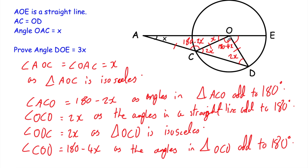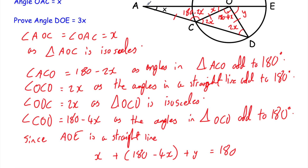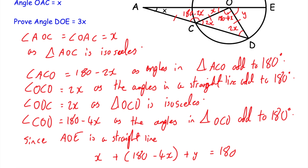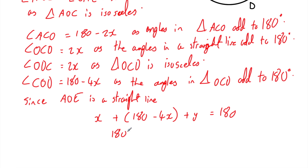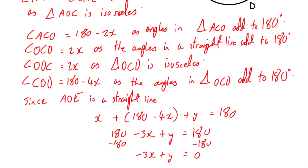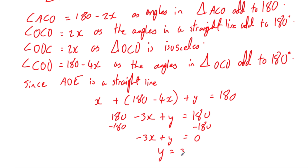Finally, since AOE is a straight line, angles AOC (which is X), COD (which is 180 minus 4X), and DOE (call it Y) must add to 180 degrees. So: X + (180 − 4X) + Y = 180. Simplifying: 180 − 3X + Y = 180. Taking 180 from both sides: −3X + Y = 0. Adding 3X: Y = 3X. So angle DOE equals 3X. QED.